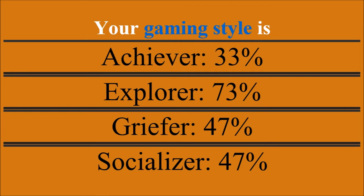A test known as the Bartle Test of Gamer Psychology was created based on Bartle's research in 1999 by Erwin Andreessen and Brandon Downey. This test contains a series of questions and a scoring formula used to classify test takers among the four personality types. The results, known as the Bartle Quotient, are calculated based on answers to 30 random questions and total 200% across the four categories, with no single personality category exceeding 100%. For example, my results said I was predominantly an explorer with 73%, followed by killer and socializer with 47%, and achiever with 33%.